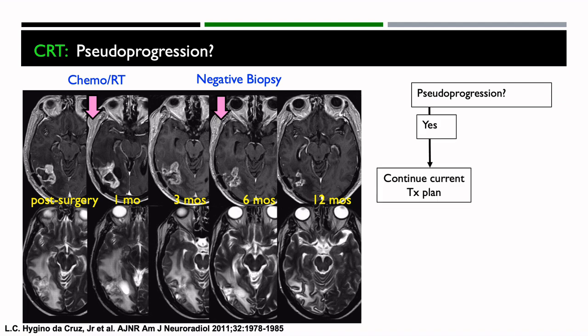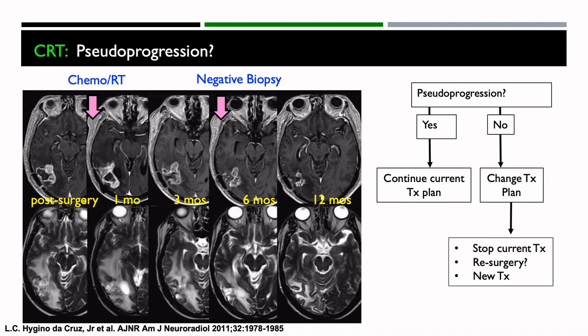It's a very difficult, confounding question for treating physicians with regard to pseudoprogression. Specifically, if you could confirm that it is pseudoprogression, then you continue the current treatment plan — it's probably going to work. If it's not pseudoprogression, then you might want to change the treatment plan, stop the current treatment, go back to surgery, or start a new treatment. So having some measure of whether it's tumor versus treatment effect is greatly important.